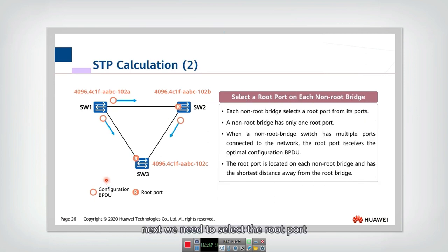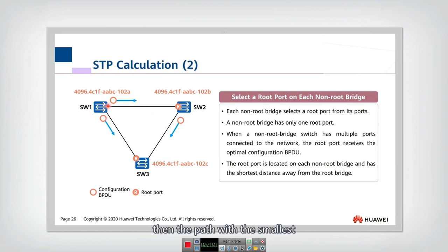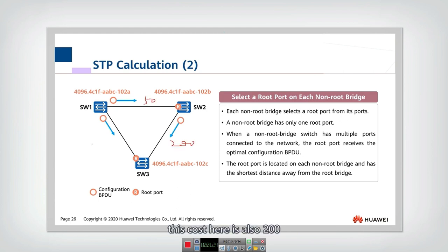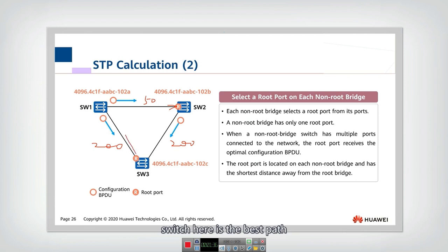Next, we need to select the root port for every bridge. For every bridge, there will be several different paths to connect it to the root. The path with the smallest root path cost is selected, and the port in that path is selected as the root port. For example, this cost is 50 and this cost is 200, so this is the best path and this is the root port. For the other switch, this path is better compared with the other one, so that port is the root port. This is the second step.